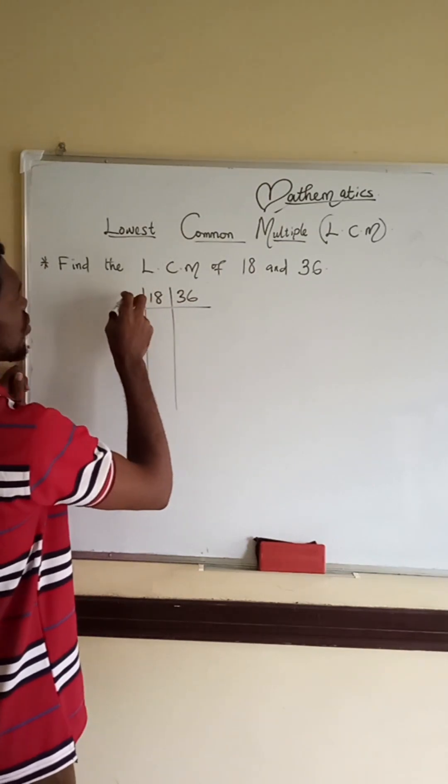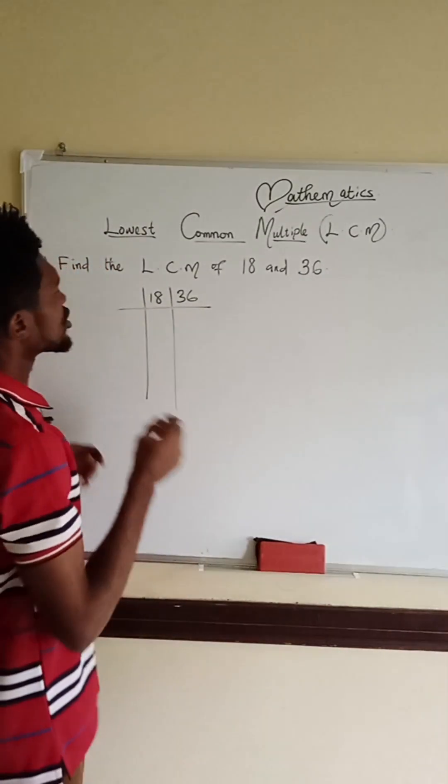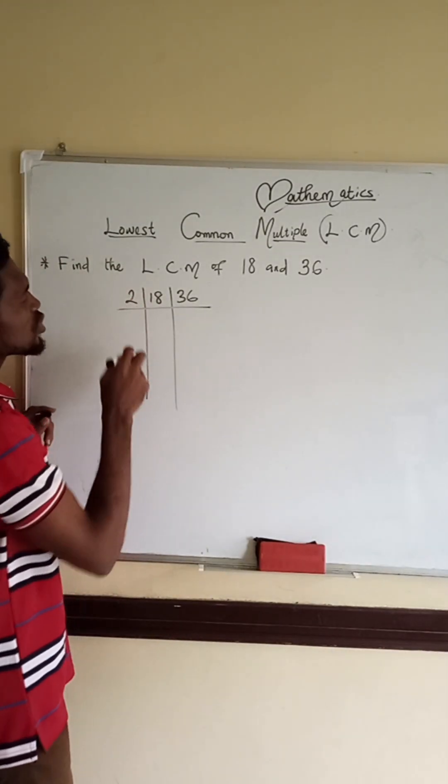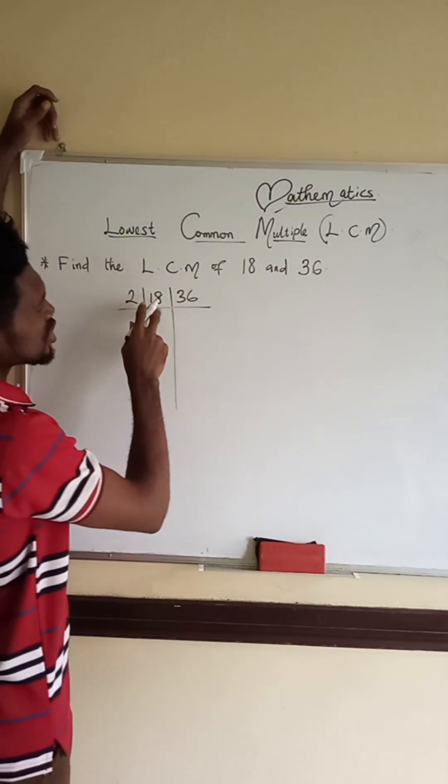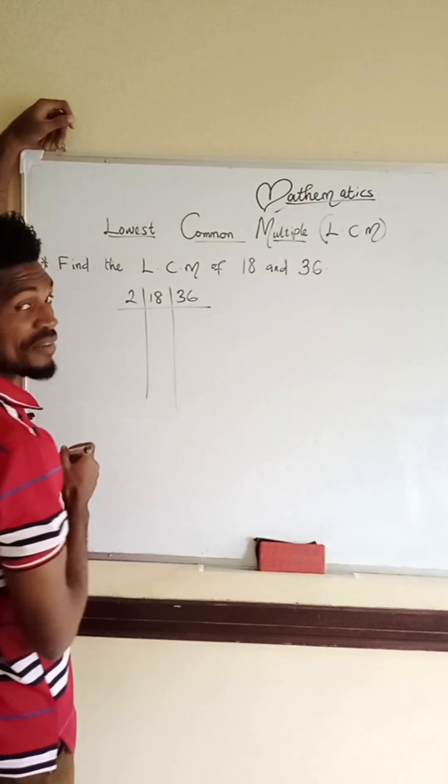Then here we have the lowest prime number, which is 2. We write 2, because we know that 2 can go in any number that ends with 8 and 6, because they are even numbers.